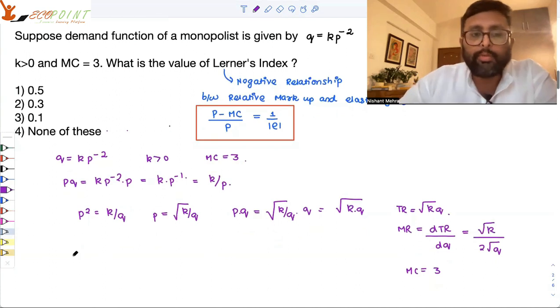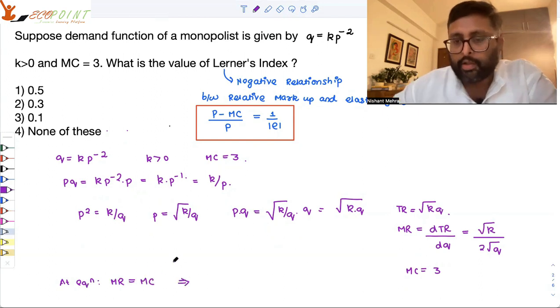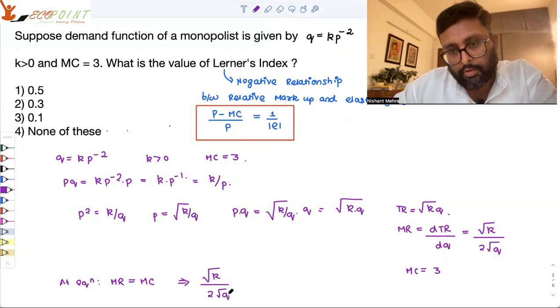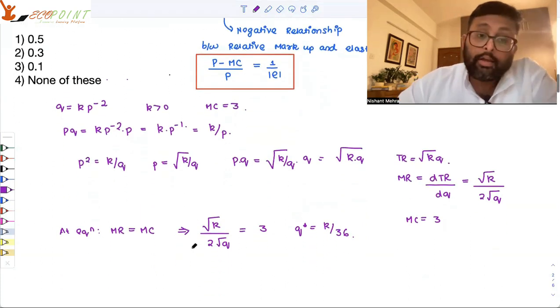What is MC? 3. So at equilibrium what is happening? At monopoly equilibrium, MR equals to MC. What is MR? Root of k upon 2 root q equals to 3. I can find out the value for q star that will come out to be k by 36.